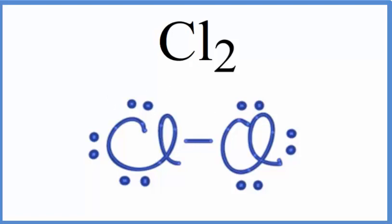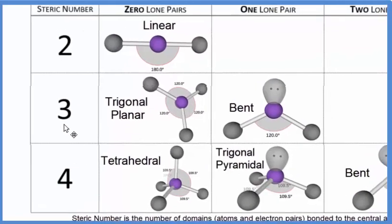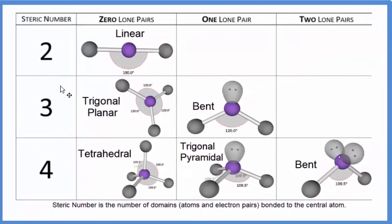When we have more than two atoms, it gets a little more complicated. A table like this that looks at steric number can be very helpful.